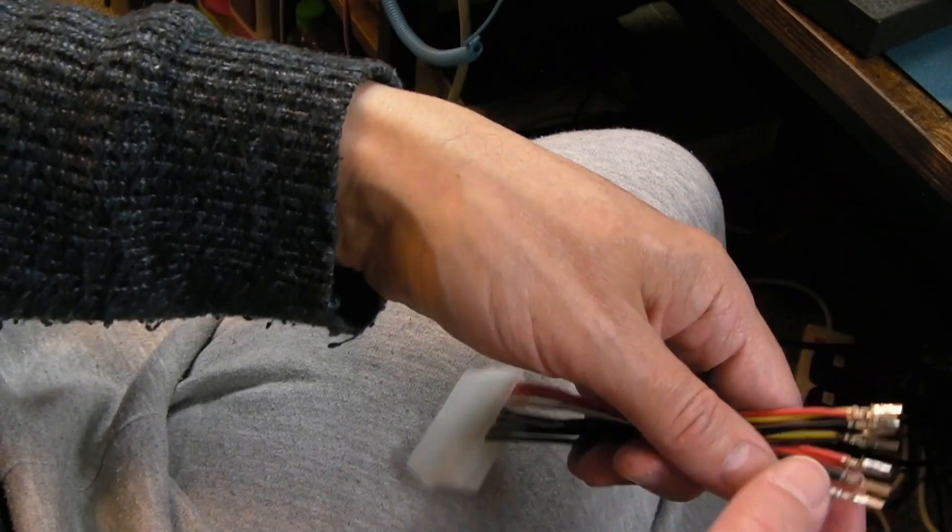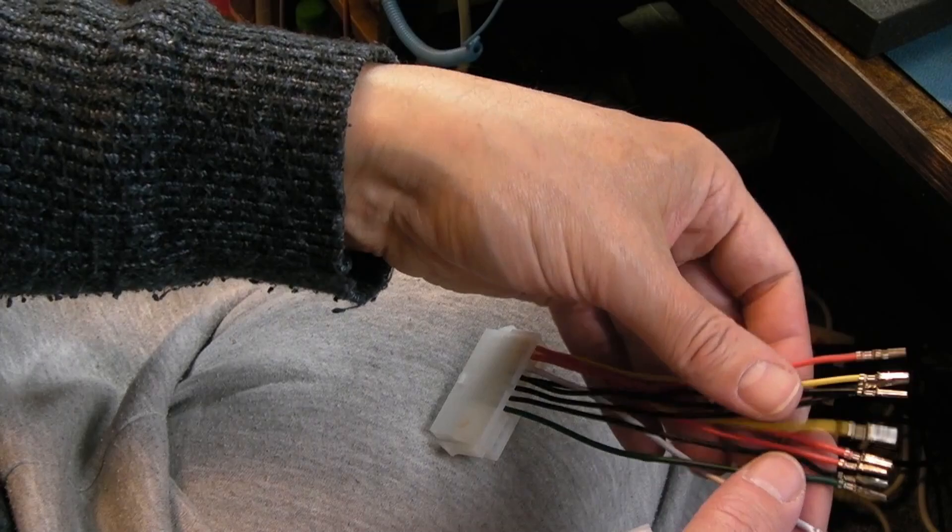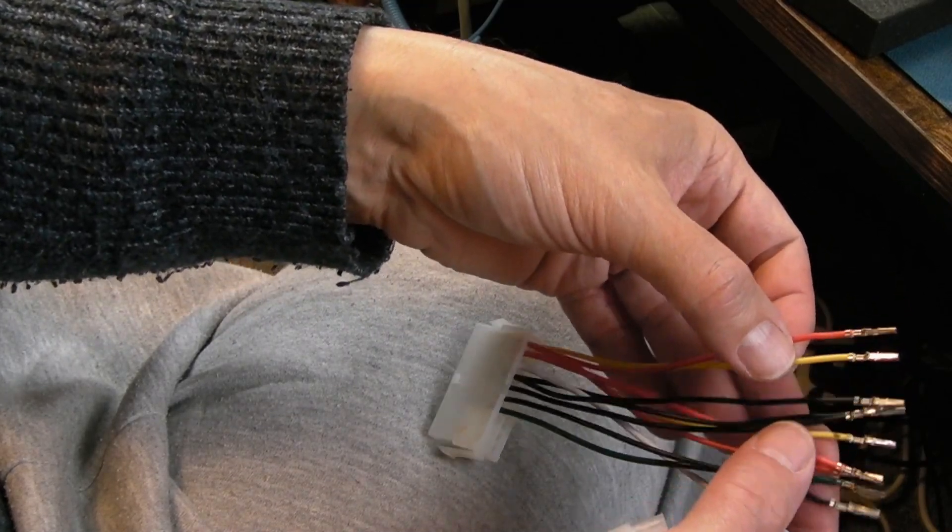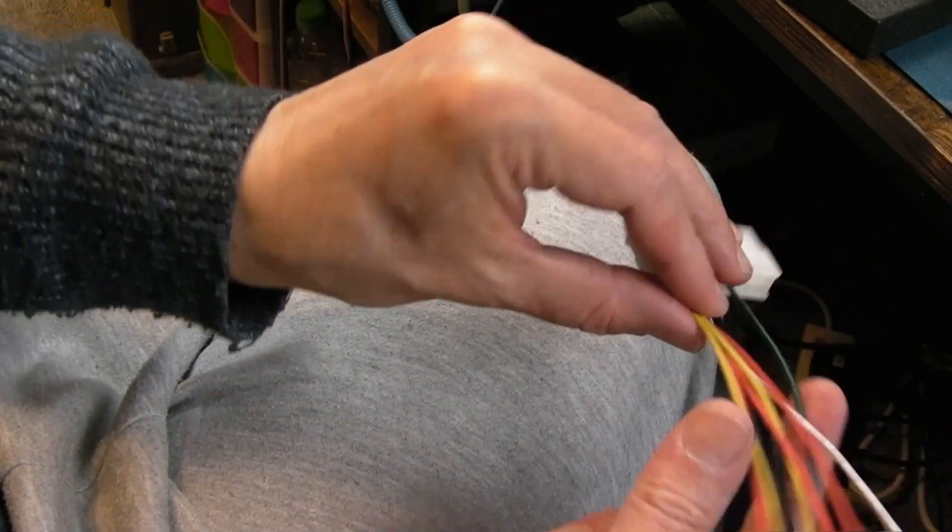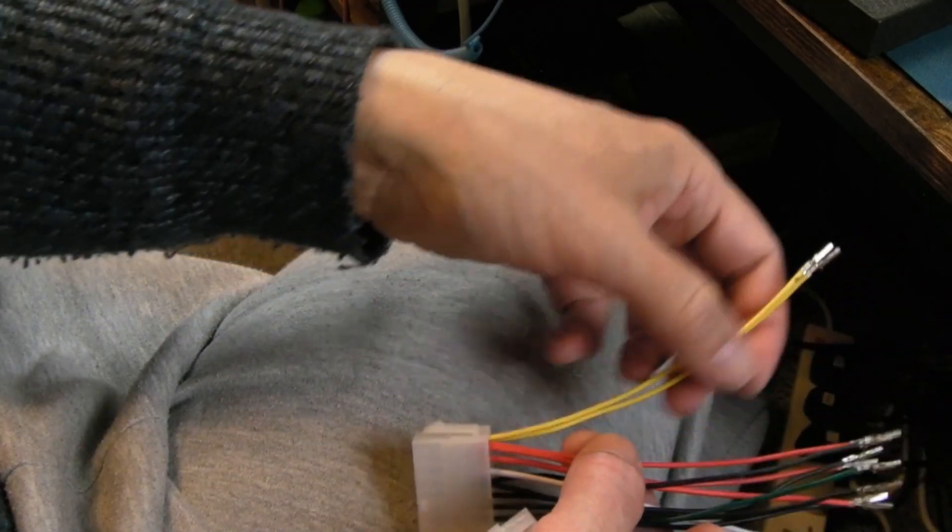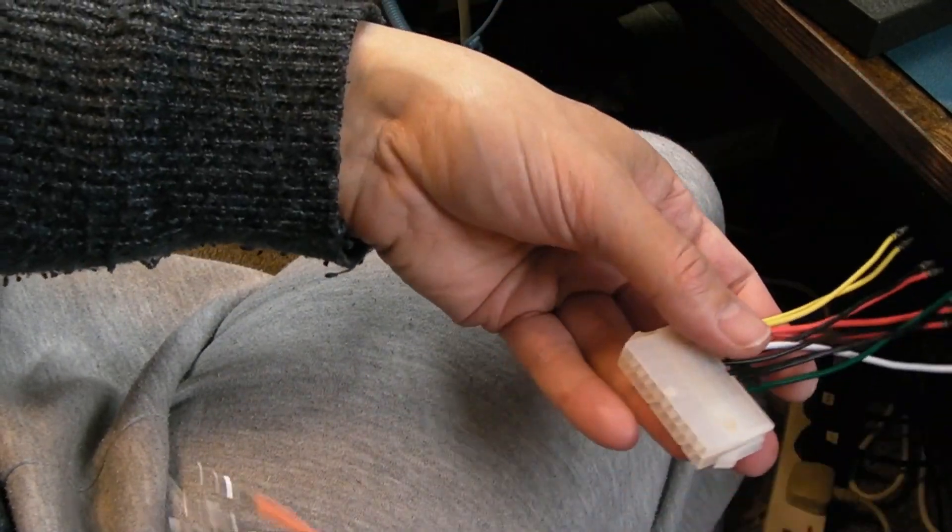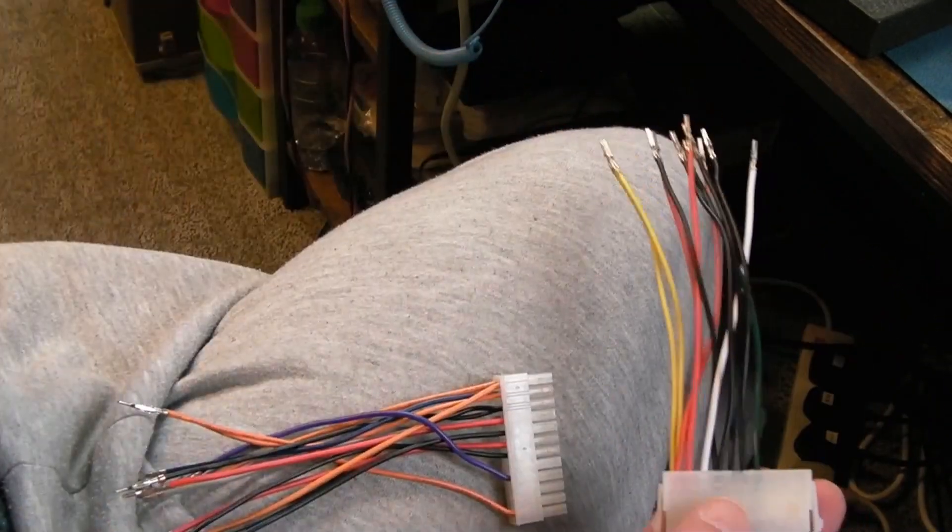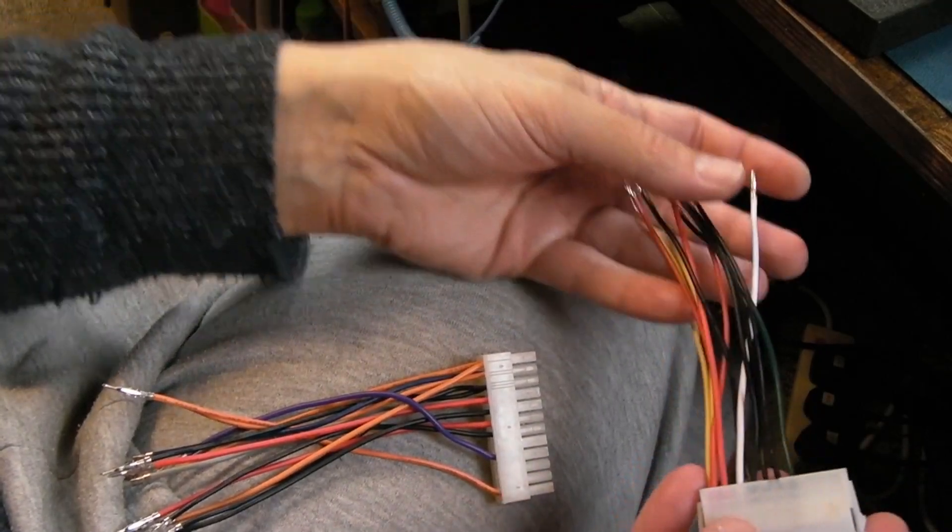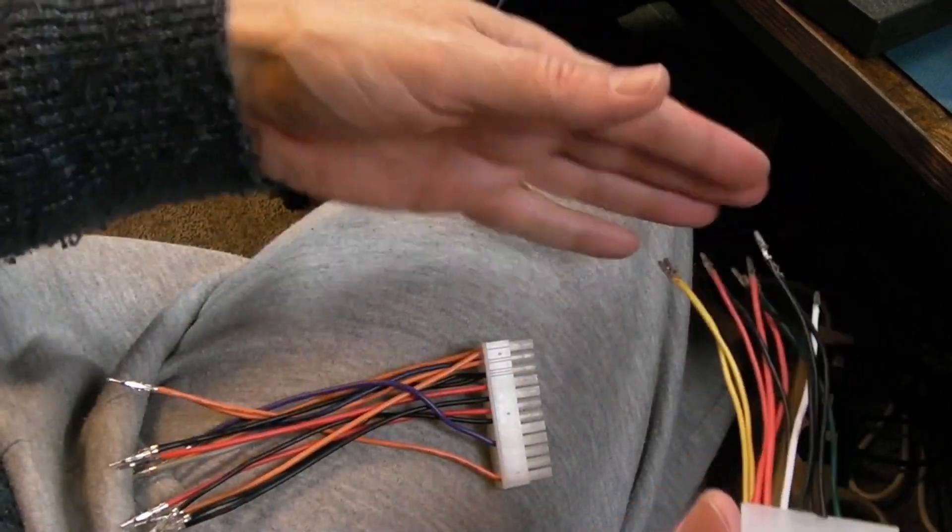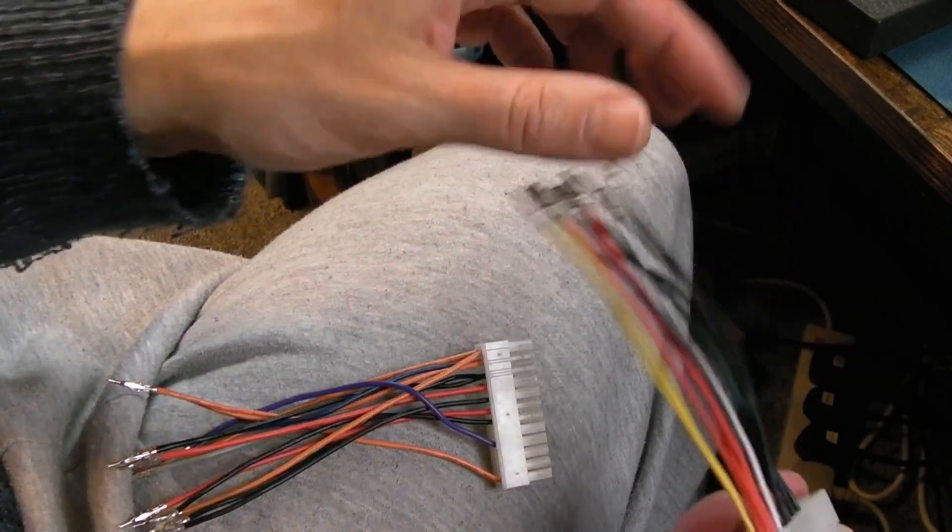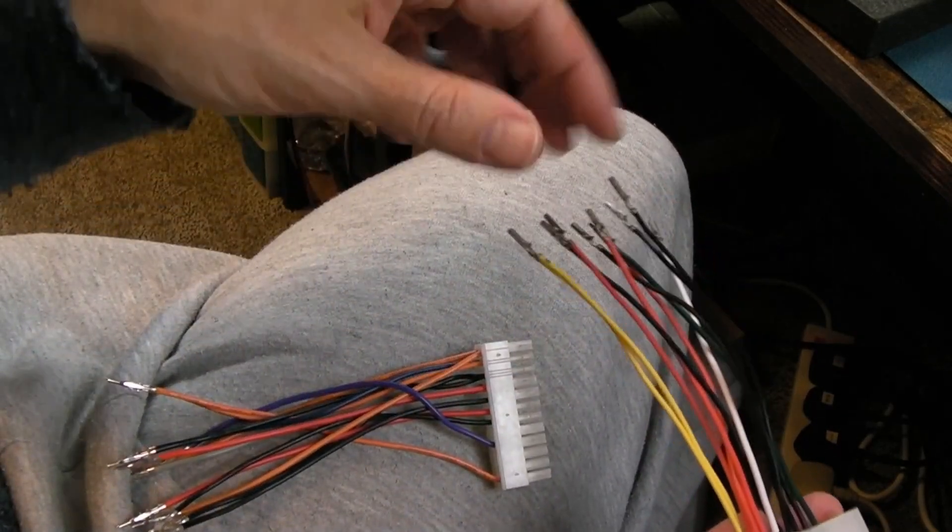And it's got all the wires I need. I just need to remove these crimp things here and stick the other connectors on. Some of these wires are going to be paired up. I think you can see there's like two yellows here.